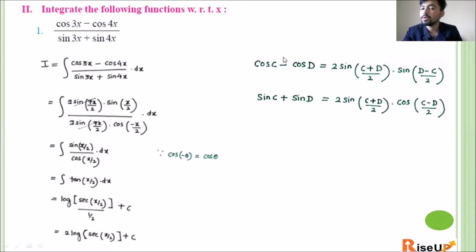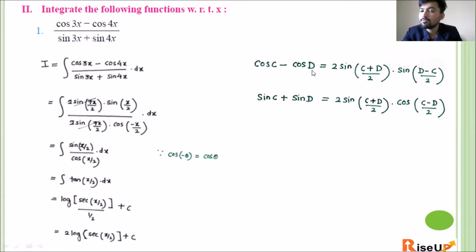We'll apply these formulas — the first for the numerator and the second for the denominator. In the numerator, cos C minus cos D gives 2 sin((3x+4x)/2) into sin((4x-3x)/2), which is 2 sin(7x/2) into sin(x/2). In the denominator, sin C plus sin D gives 2 sin((3x+4x)/2) into cos((3x-4x)/2), which is 2 sin(7x/2) into cos(-x/2).